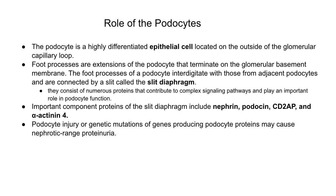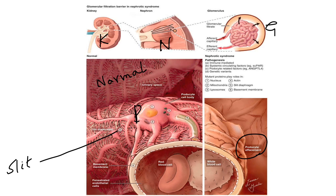Regarding pathogenesis of nephrotic syndrome: the podocyte is a highly differentiated epithelial cell located on the outside of the glomerular capillary loop. Foot processes are extensions of the podocyte that terminate on the glomerular basement membrane. These foot processes interdigitate with those from adjacent podocytes and are connected by a slit called the slit diaphragm, made of proteins such as nephrin, podocin, CD2AP, and alpha-actinin-4. Any injury to these podocytes or genetic mutations of genes producing podocyte proteins may cause nephrotic range proteinuria.